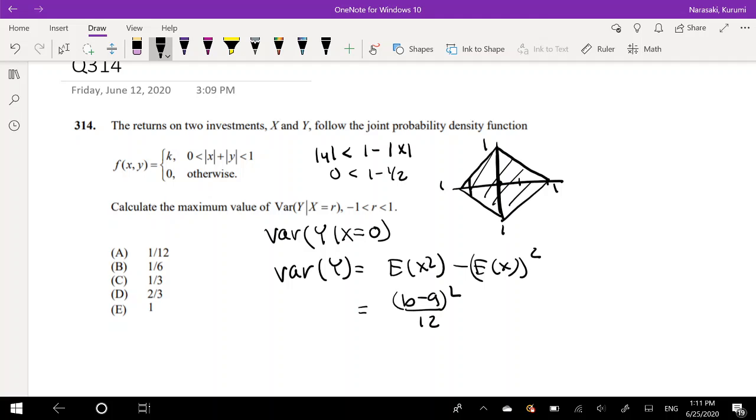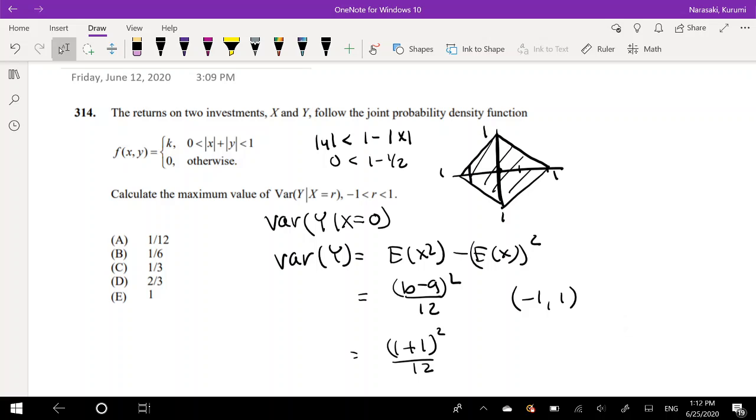So on the range negative 1 to 1, we can just plug those in. So that's going to be equal to 1 minus minus 1, which is 1 plus 1 squared over 12 is our variance for uniform distribution functions. So this is equal to 2 squared over 12, which is 4 over 12, which is equal to 1 third, which is your answer, C.